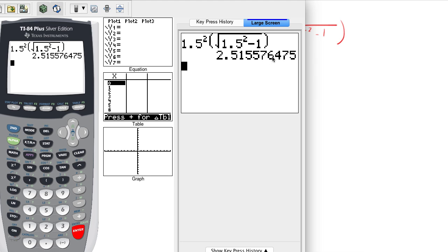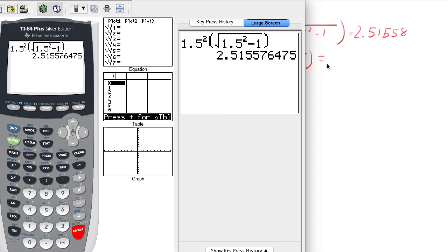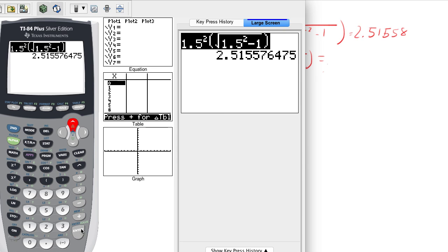That's a 7 because we're rounding, so 2.51558. We're going to do the same thing for f of 3. Now if you're following along with me and you're saying to yourself, well obviously I don't need to do all this, well then scroll ahead in the video.